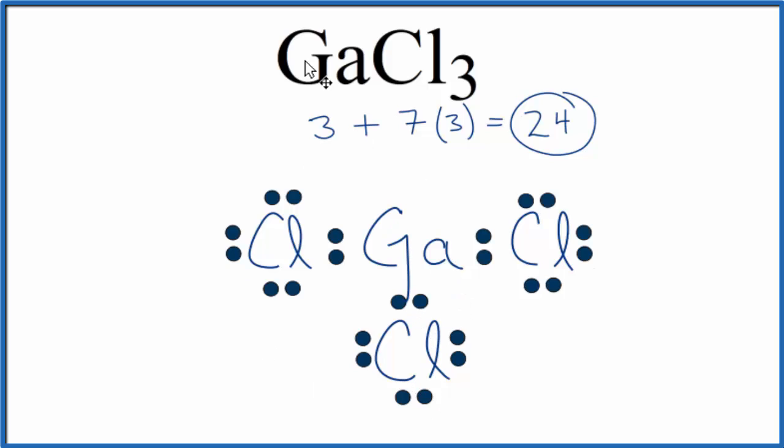So this is the Lewis structure for GaCl3. Let's take a quick look at the molecular geometry. We have our central gallium atom, and then we have three atoms attached, and there's no lone pairs here. Let's see what that looks like.